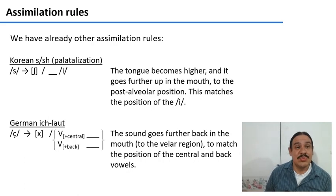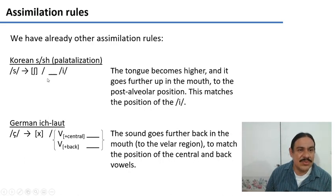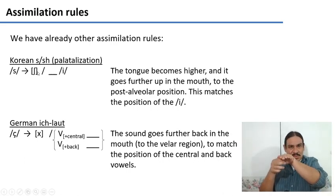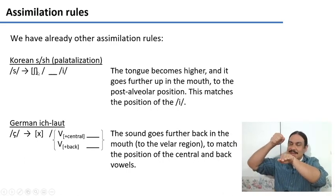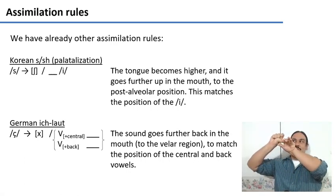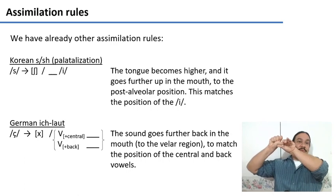We've seen other assimilation rules during the week. For example, in Korean the s transforms into esh whenever it is followed by an i. And we call this palatalization because the s is in the alveolar position. The i has the tongue fairly high up and moves your tongue backwards into a position that is more like the one for the i.